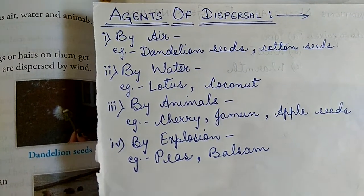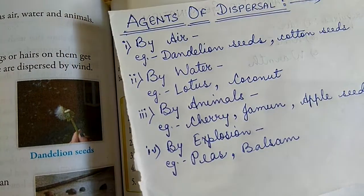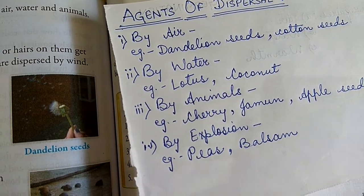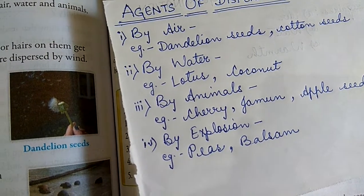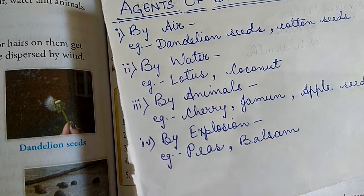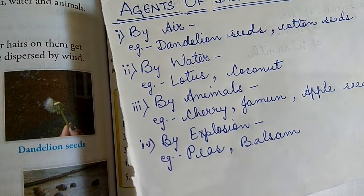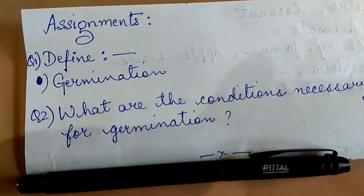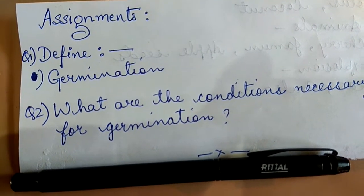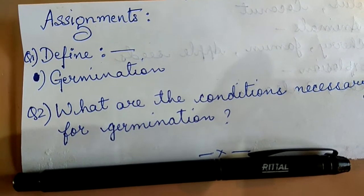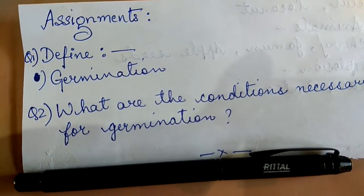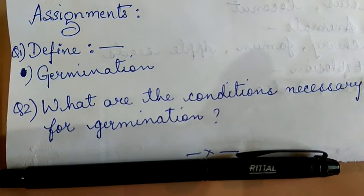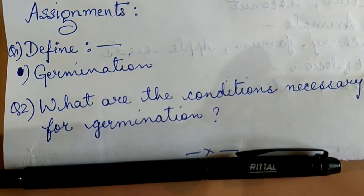So today, children, the first type of growing plants explanation is over. Now it's time for giving some assignments. Please read the explained topics carefully and write the given assignment in your copy. Question number 1: Define germination. Question number 2: What are the conditions necessary for germination?